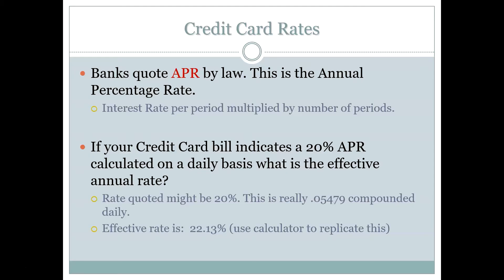Here's another example. Let's say we have a credit card that indicates a 20% APR, which is not an uncommon APR for a credit card. It's calculated on a daily basis, which is fairly common for credit cards. What we want to know is: what are we effectively paying? We know we're not paying 20% per year because we're paying interest on a daily basis, so there's going to be compounding every day. That means ultimately what we'll end up paying over the year is higher than 20%.